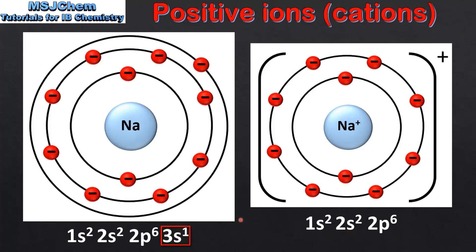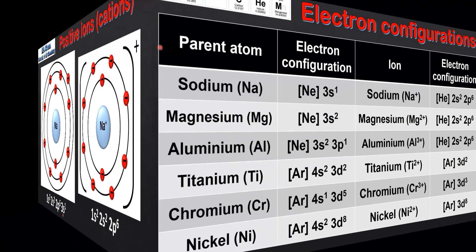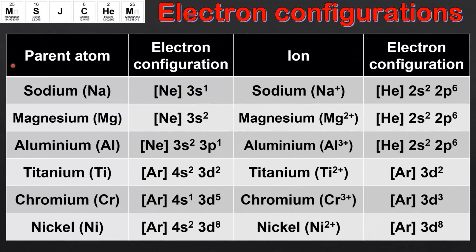There are two important points. The first is that positive ions are formed when atoms lose electrons. The second is that the electrons are lost from the highest energy sublevel first. In the case of the sodium atom, the first electron is taken from the 3s sublevel because it has the highest energy.